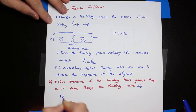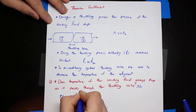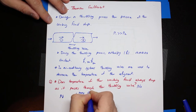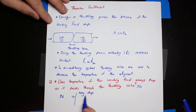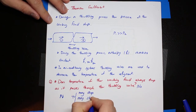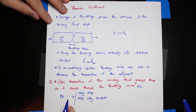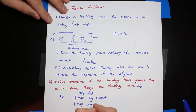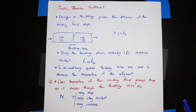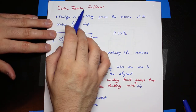As pressure drops, three different scenarios may happen to the temperature: the temperature may drop, which is exactly what happens in air conditioning systems; the temperature may stay constant with no change; or the temperature may even increase. The behavior of temperature during a throttling process is described by the Joule-Thompson coefficient, which is the title of today's lecture.